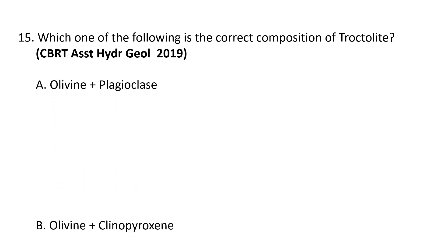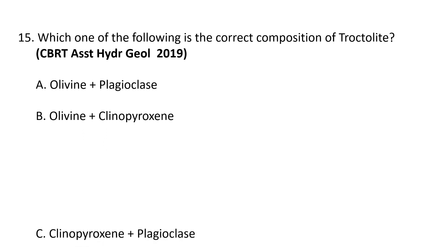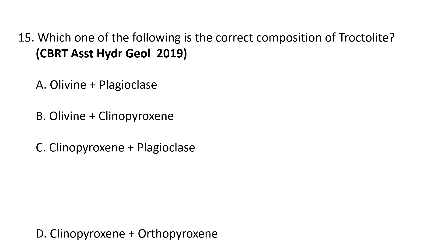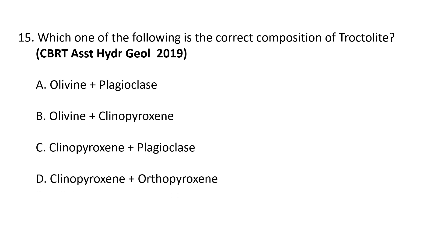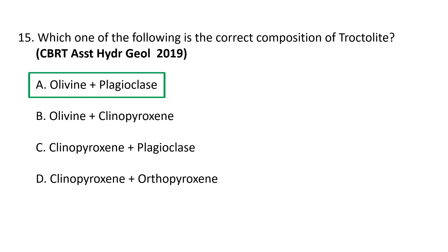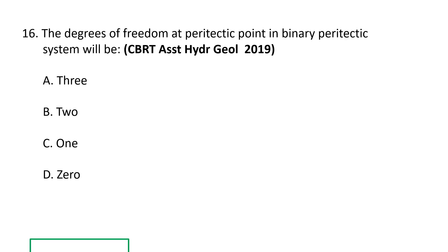Next question: which one of the following is the correct composition of troctolite? a) olivine and plagioclase, b) olivine and clinopyroxene, c) clinopyroxene and plagioclase, d) clinopyroxene and orthopyroxene. Troctolite — from the Greek for 'trout stone' — is a mafic intrusive rock consisting essentially of olivine and calcic plagioclase along with minor pyroxene. It is an olivine-rich anorthosite or pyroxene-depleted gabbro. The correct composition is olivine and plagioclase; a is the correct option.